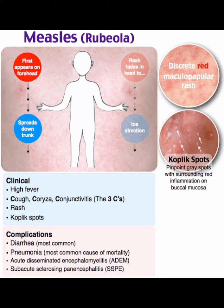Koplik spots are pinpoint gray spots with surrounding red inflammation found on the buccal mucosa. There is a gray color spot located around the buccal mucosa.